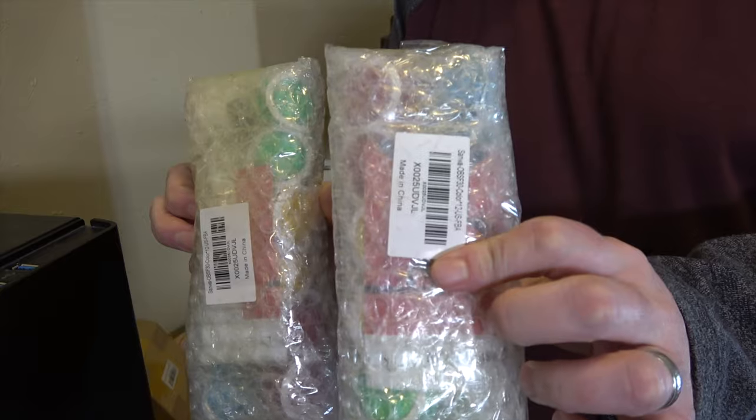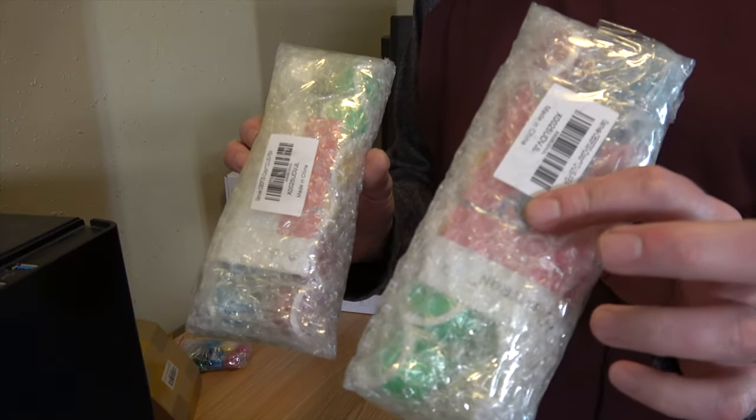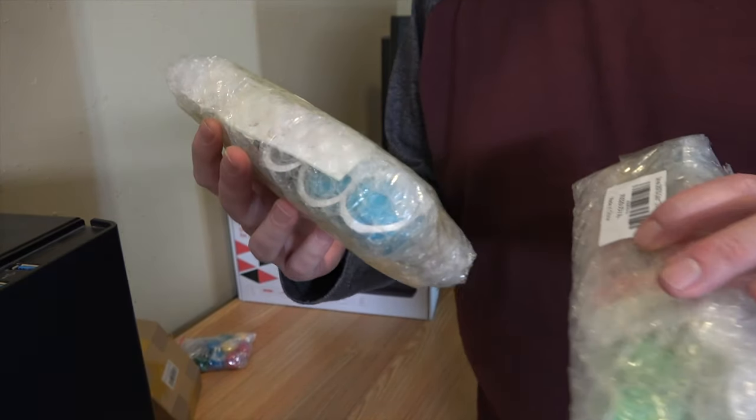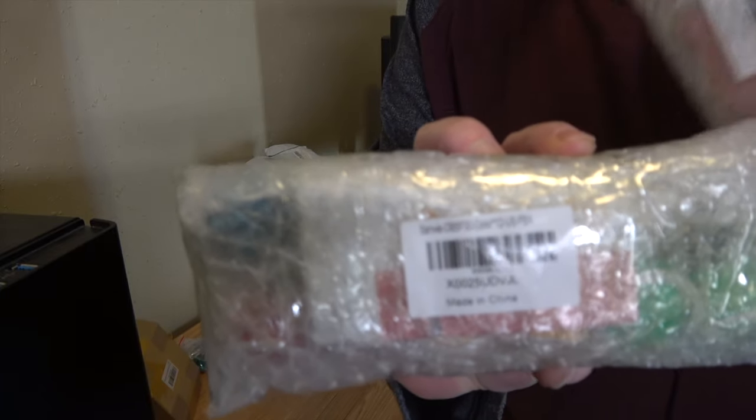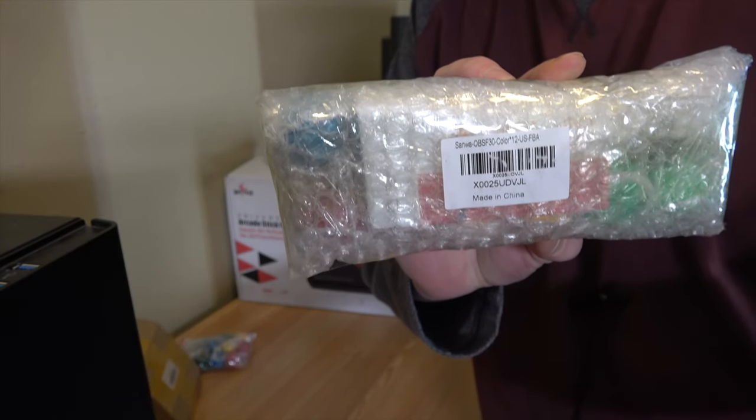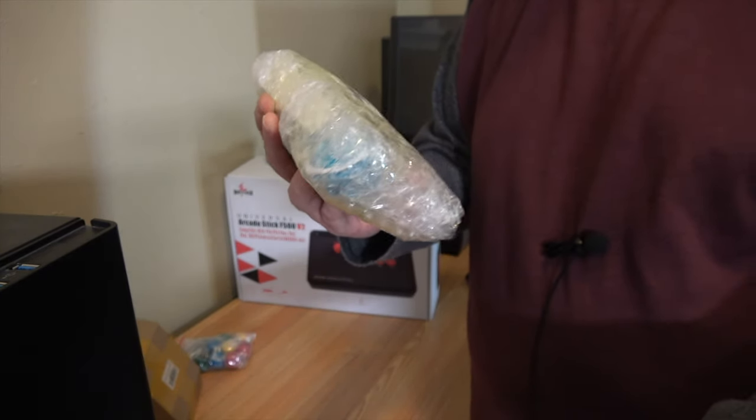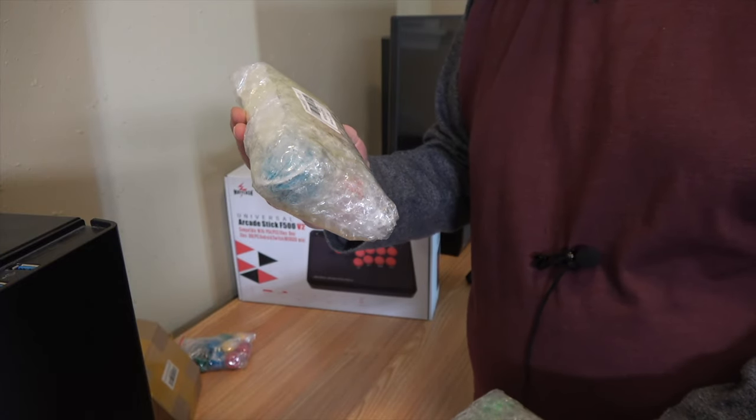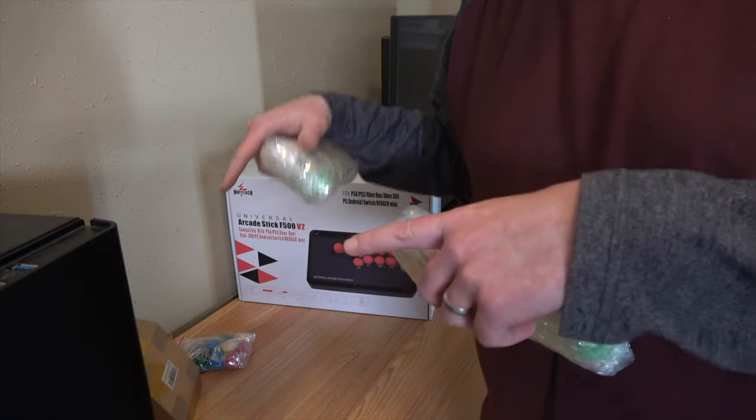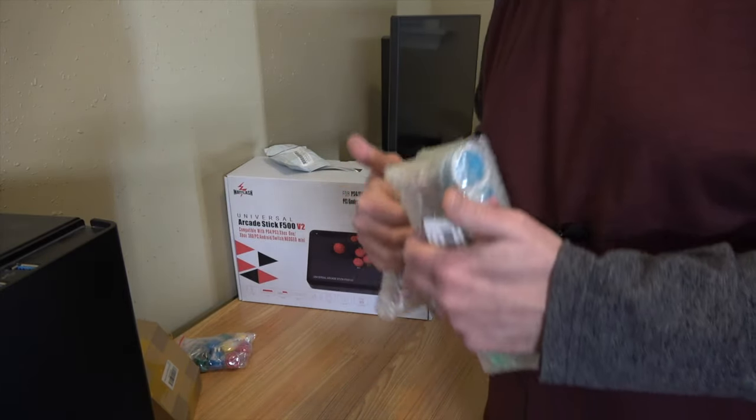And finally, this is two sets of 30mm buttons. There's a bunch of different colors in there. It was cheap to get two sets because I want eight a piece with the Neo Geo colors, so these are Sanwa buttons. So I'll put links to the sticks and the buttons and everything down in the description, and those are affiliate links. If you want to use them, it does help out the channel, and we appreciate it.